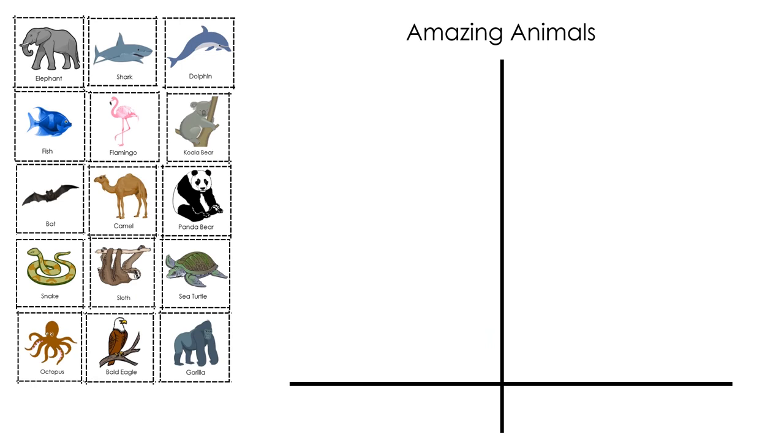This time I'm going to sort and classify the animals, but I'm not going to tell you the characteristics I'm using to make my two categories. Let's see if you can figure out how I made the groups by paying attention to how the animals in each category are the same, but different from the animals in the other category.